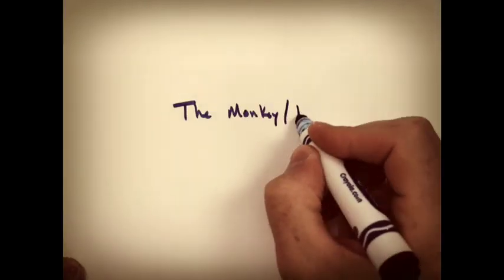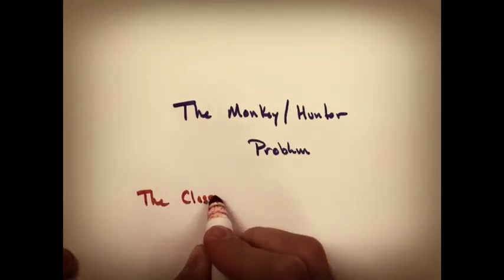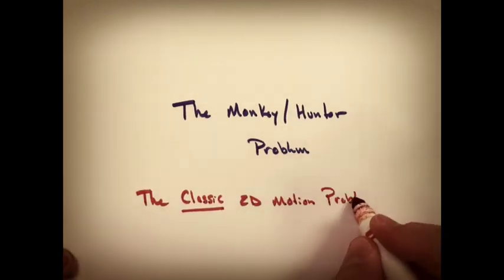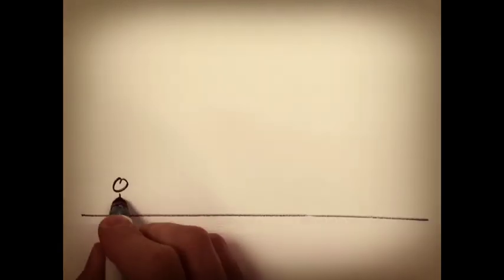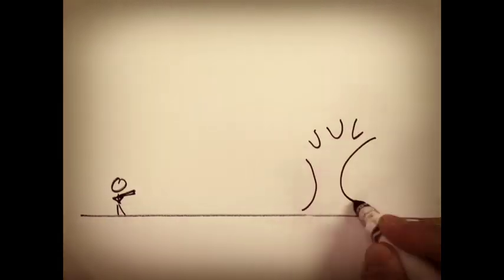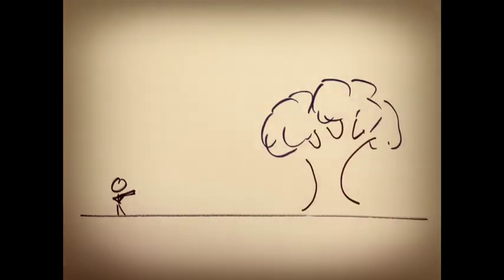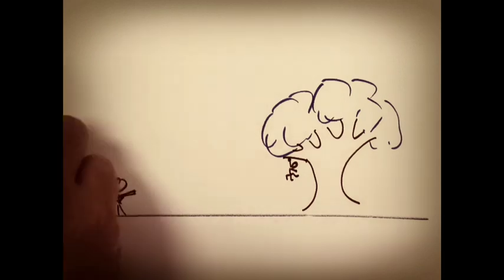And here we go, the monkey hunter problem - indeed, the classic 2D motion problem physics students all across the country are subject to every fall. If you're not familiar with the problem, a hunter sees a monkey hanging in a tree. Realizing that when he shoots, the monkey will probably become scared and let go.